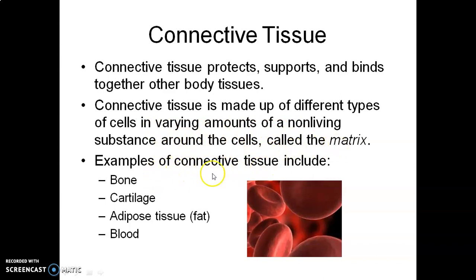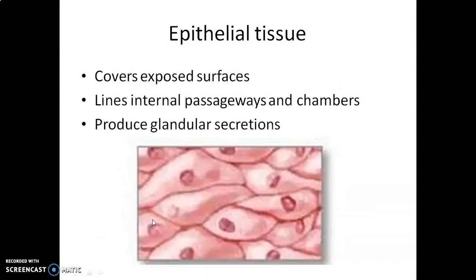called the matrix. Examples of connective tissue include various types such as blood, bone, cartilage, and adipose tissue. These are the types of connective tissue.